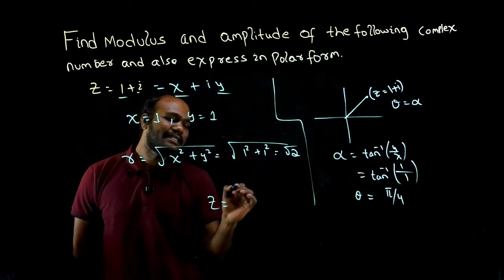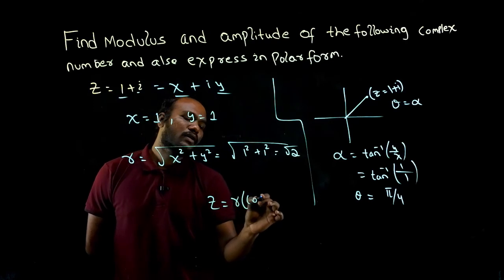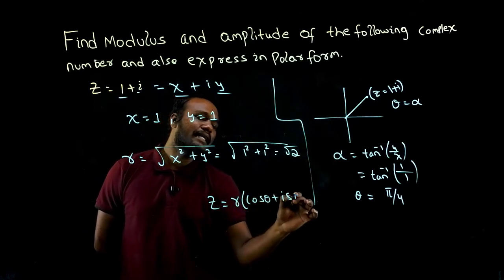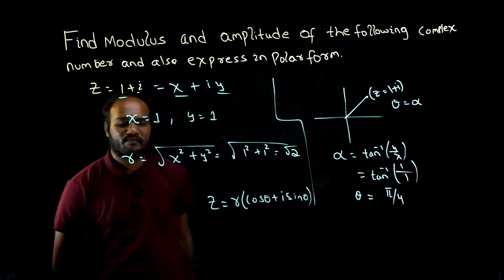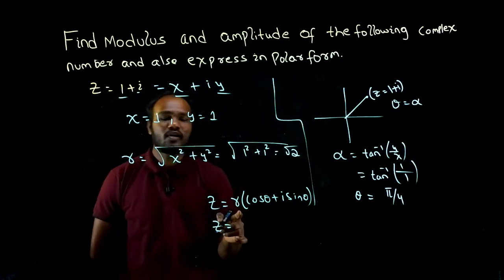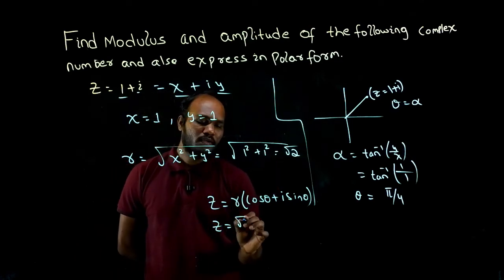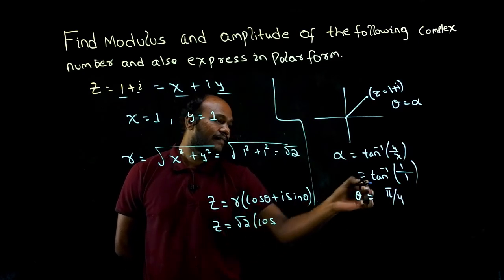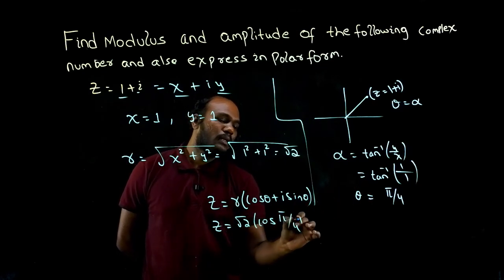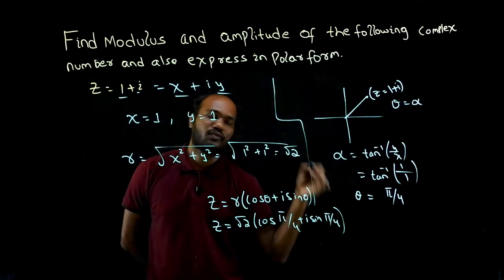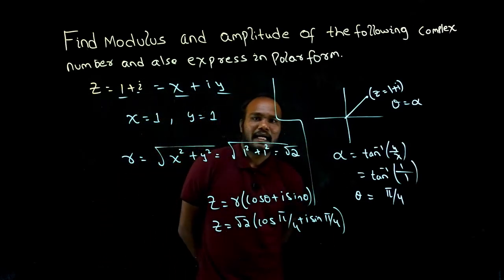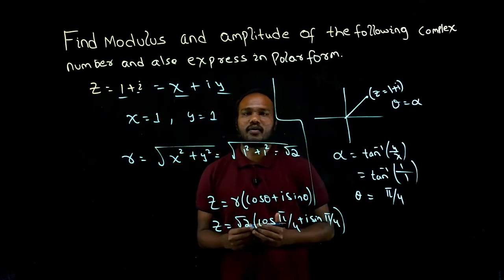Next, we need to know Z is nothing but r times cos theta plus i sine theta. This is the polar form. So if I just substitute, what is r value? Root 2. Cos theta, what is theta value? Pi over 4 plus i sine pi over 4. Is that okay?